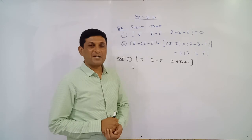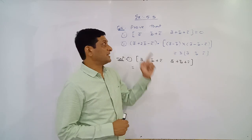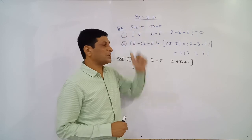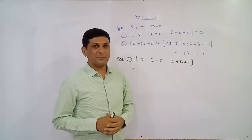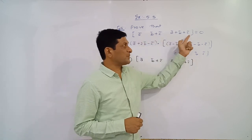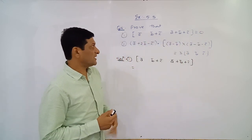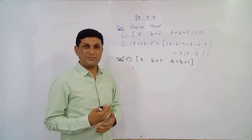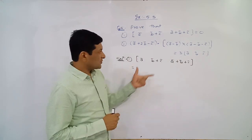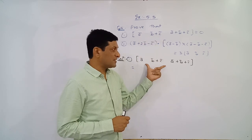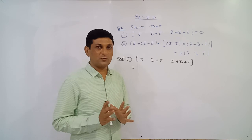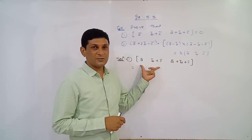We are starting the next example from Exercise 5.5, Question 4. There are two examples here. In the first example, we have to show that the value of this box product equals zero. Let us solve it using the definition of box product, which means scalar triple product. We are considering the left-hand side and will simplify it to show it equals the right-hand side.